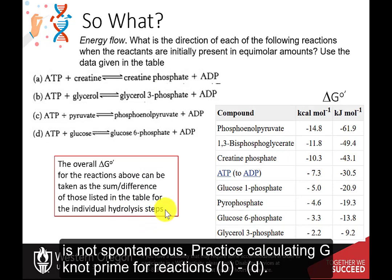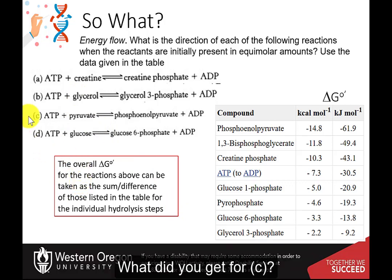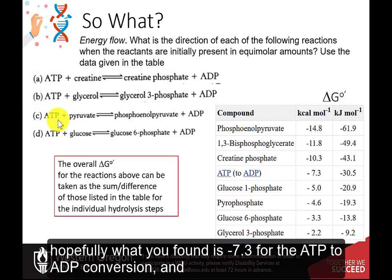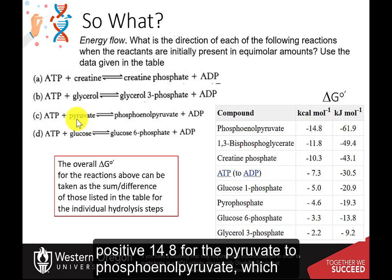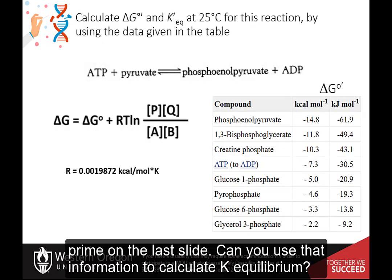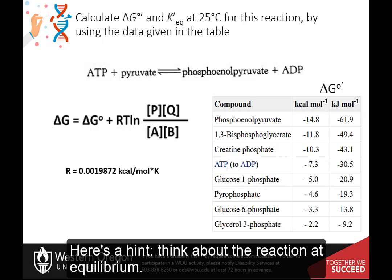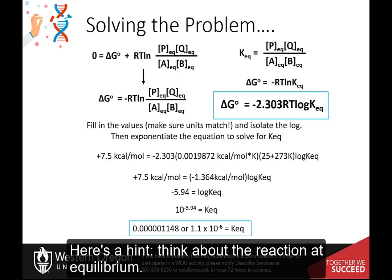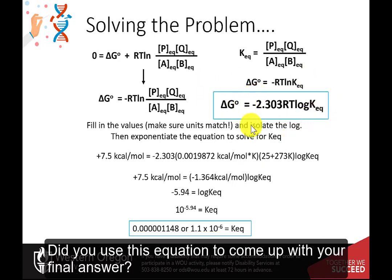Practice calculating delta G naught prime for reactions B through D. For reaction C, hopefully you found negative 7.3 for the ATP to ADP conversion and positive 14.8 for pyruvate to phosphoenolpyruvate, which equals plus 7.5 for the overall reaction — not spontaneous. Can you use that information to calculate K-Equilibrium? Think about the reaction at equilibrium and use the equation delta G naught equals negative RT natural log of K-Equilibrium.